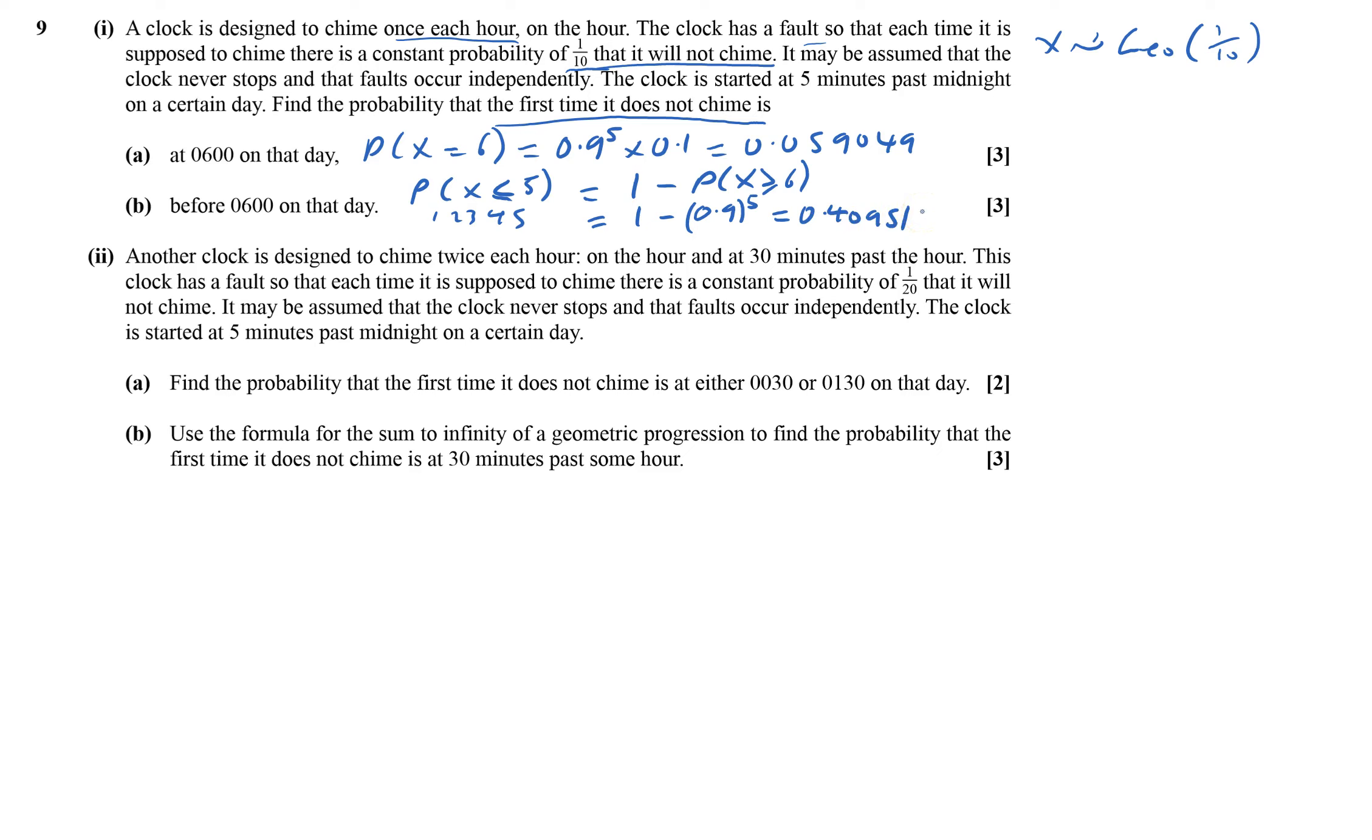Now we've got another clock on the hour and every 30 minutes with constant probability of one-twentieth. Let's call this Y tilde. It's still going to be geometric, and we're looking at one-twentieth. We've got to work out the probability that it does not chime either 30 minutes past or 1:30. The probability that Y equals 1, which is one-twentieth.